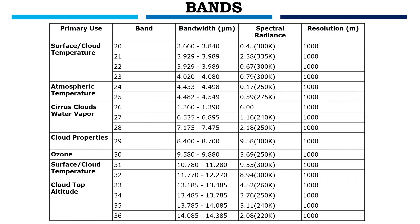For surface and cloud temperature, we use bands 20 to 23. These are thermal bands with 1000-meter spectral resolution. For atmospheric temperature depth, we use bands 24 and 25, which have 1000-meter resolution. For cirrus clouds and water vapor, we use bands 26 to 28, which also have 1000-meter resolution.